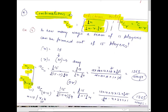We will solve this problem. Factorial 15 divided by factorial 4 into factorial 11. We expand 15 factorial down to 12, and then cancel the factorial 11. So the answer is 1365 ways — we can choose 11 players out of 15 in 1365 ways.